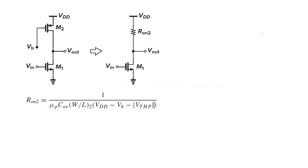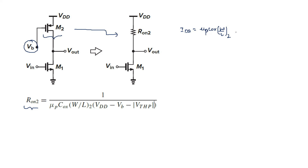The gate biasing voltage V_B is a small voltage such that M2 is acting in the deep triode region. For this M2 device, the resistance it offers is R_on2. This resistance value is calculated from the M2 transistor current equation in the deep triode region. The drain current id2 is equal to μp·Cox·(W/L)2 · (V_SG − V_thp) · V_SD, where μp is used since M2 is a PMOS device.